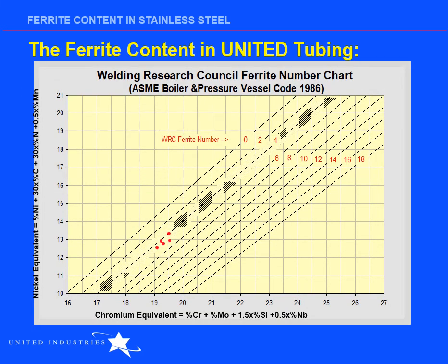If we plug in the actual compositions of several 316L heats used by United into the WRC formula, we can see that United's tubing tends to have a ferrite number right around 4, which is well within the WRC recommended range.